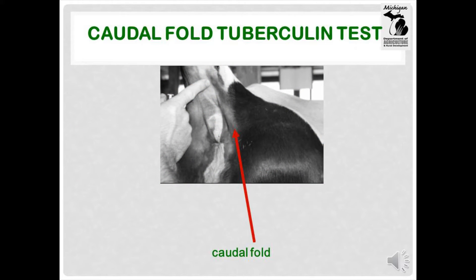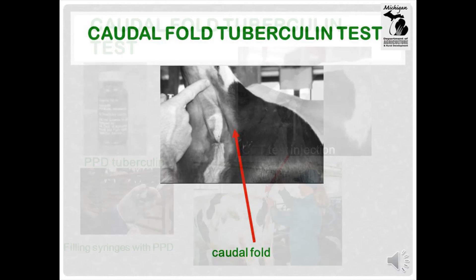The caudal fold tuberculin test, often called the CFT, is the primary screening test used for cattle. The caudal fold is a skin fold on either side of the tail of the cow. Screening tests are designed to cast a wide net. This means that in addition to truly infected cattle, there will be a number that test positive but are not infected. These are called false positives.